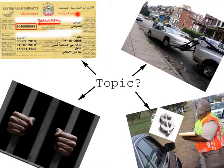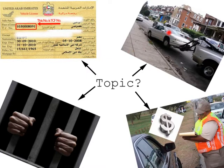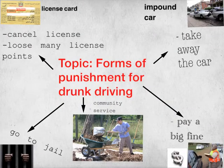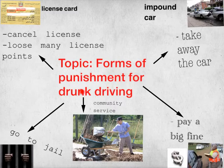First of all, this is a license card. Should a government take away your license? Should the government take away your car? Should the government put you in jail? Or should they give you a fine? What do you believe is the right thing to do? The topic is forms of punishment for drunk driving.